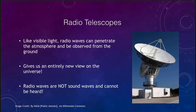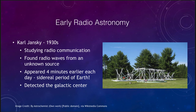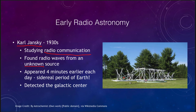Let's look at the beginnings of radio astronomy. Starting back in the 1930s, Carl Jansky built some of the very early radio telescopes. This does not look anything like any telescope we've looked at before — it's essentially a big antenna that he used to detect radio waves from space. Now, that wasn't what was intended; he was studying radio communication here on Earth and found radio waves from some unknown source.